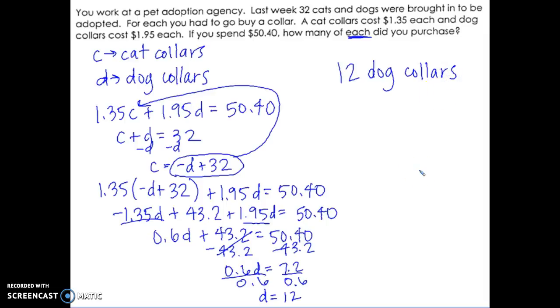And I'm going to plug 12 back in. I've already got C by itself here, so I'm going to say C equals negative 12 plus 32. Negative 12 plus 32 is 20. So there were 12 dog collars and 20 cat collars.